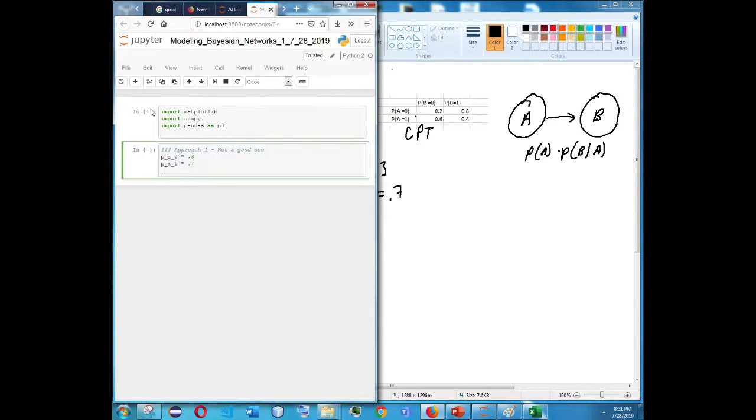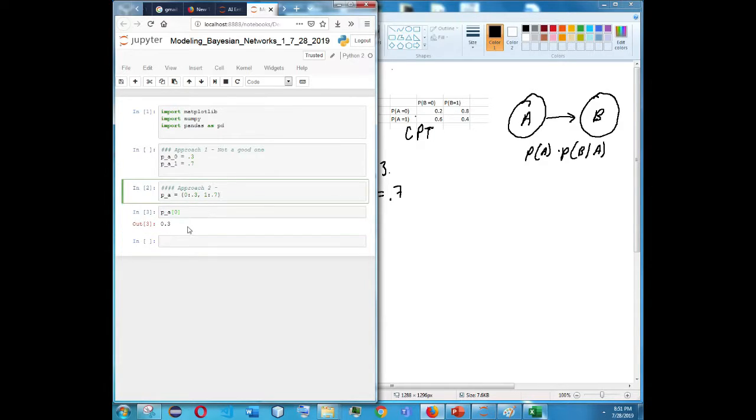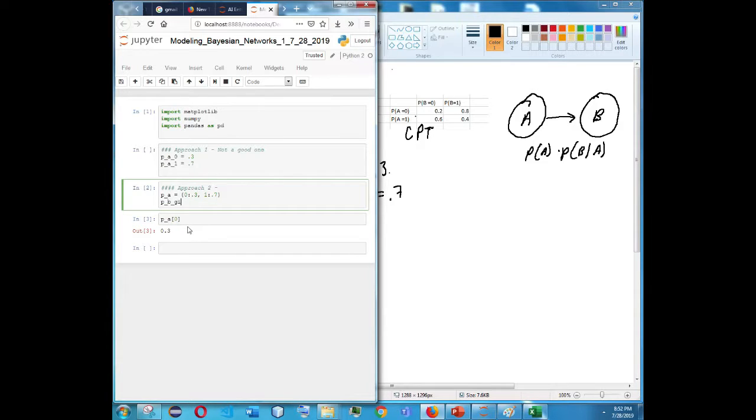The second approach could be something like storing these in dictionaries. So in Python we can store things as a dictionary. So we could say P of A and we could do something like 0 maps to 0.3 and 1 maps to 0.7. So you could do that, and then from there I could do P of A given 0 and you'll get the value.